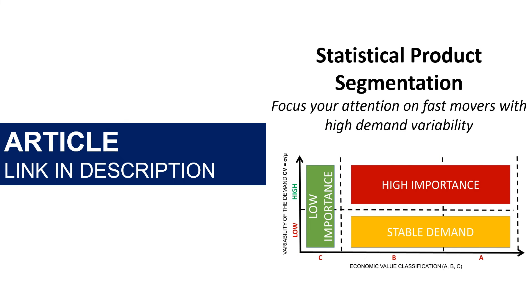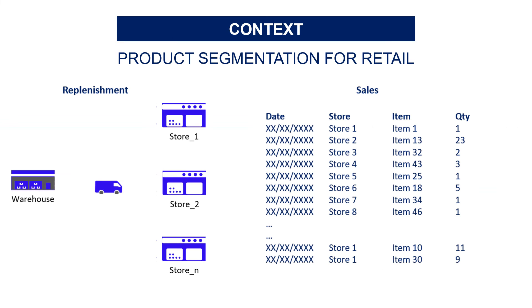Final example: product segmentation. The idea is to build a statistical methodology to segment your products based on turnover and demand variability. You can find an article with a detailed explanation on my blog — link in the description. The context is supply chain operations for a retail company: you have a central warehouse delivering several stores for replenishment, with several thousands of SKUs that you need to segment — both to optimize warehouse operations and to know where to focus your attention for inventory management.